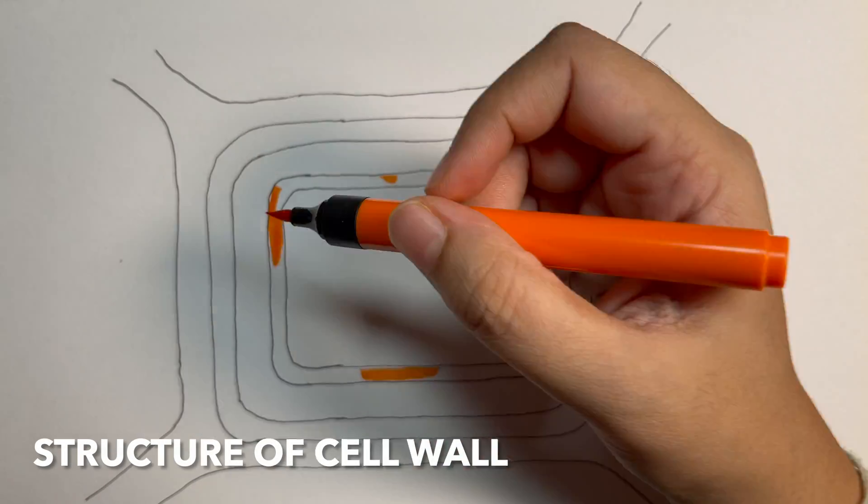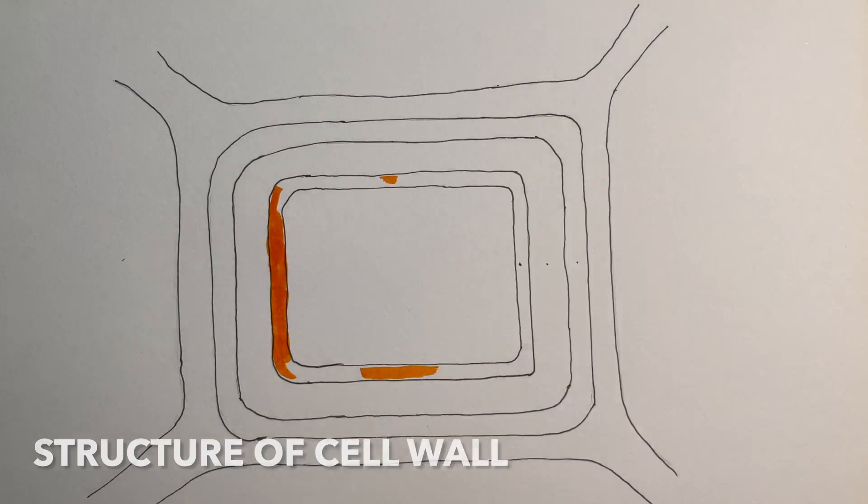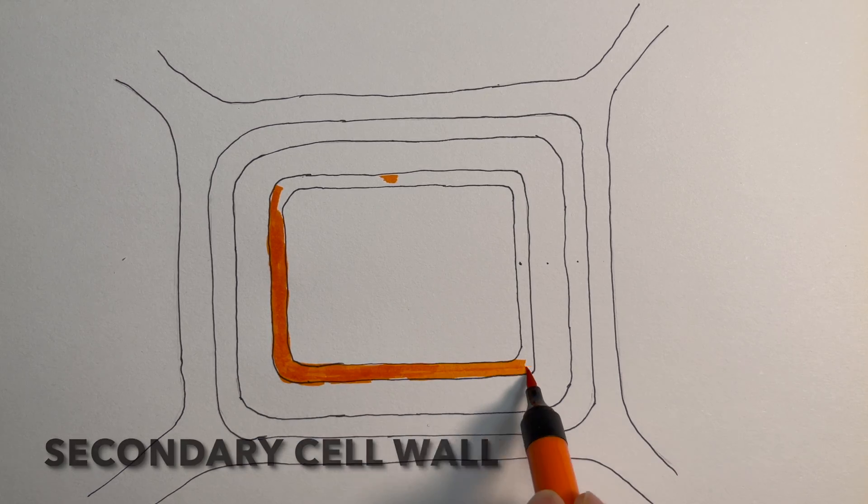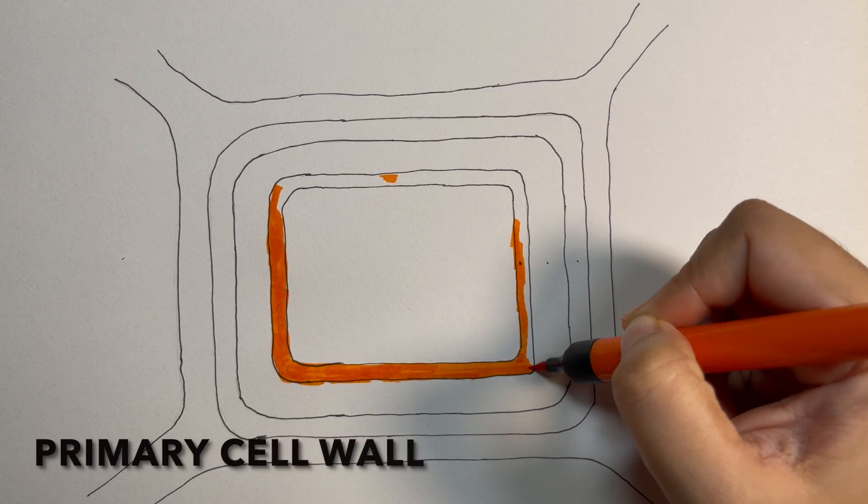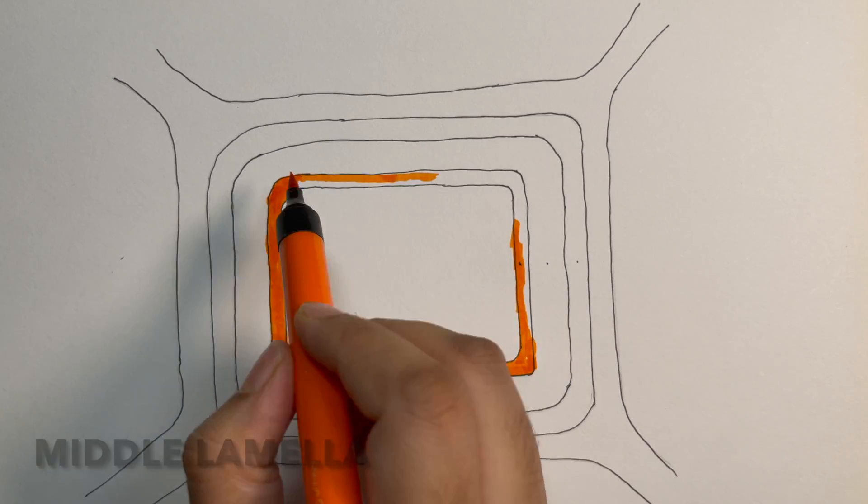Now let us see the structure of cell wall. The inner layer of the cell wall is known as the secondary cell wall. Above it is the primary cell wall and the outer layer is known as the middle lamella.